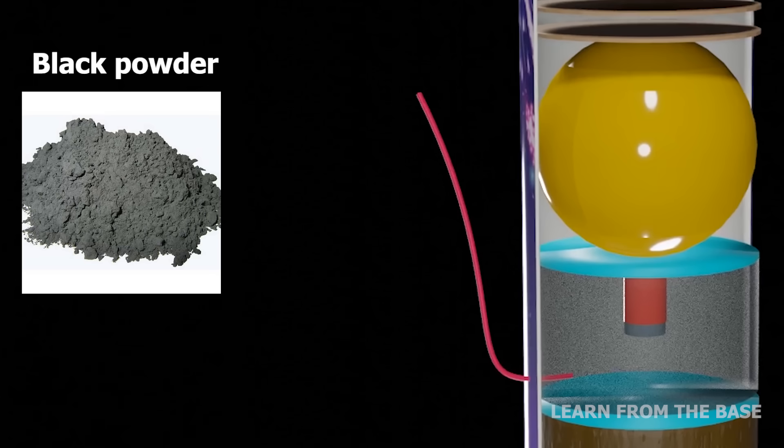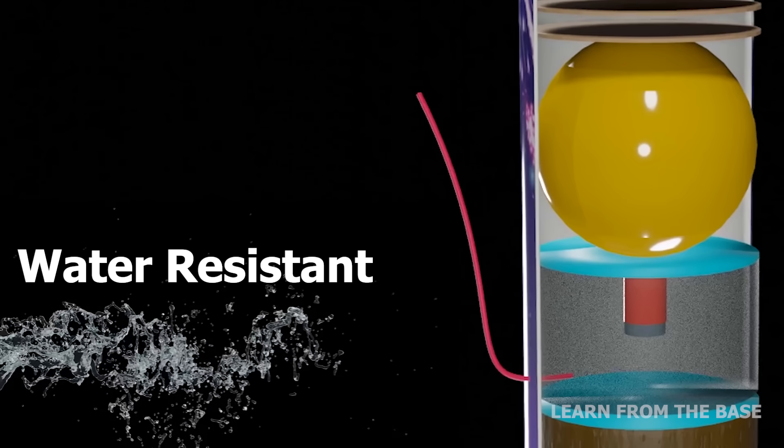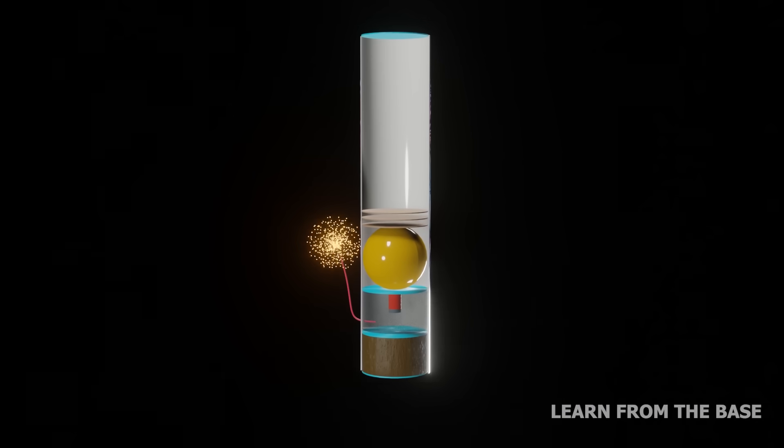The fuse has a core of black powder with one or more textile overwraps. The outer layers may be coated with wax for water resistance. These fuses are widely used in modern pyrotechnics because they burn at a uniform rate.